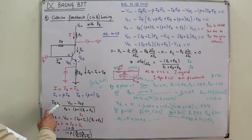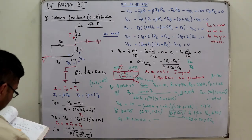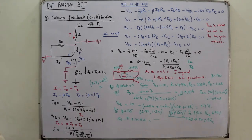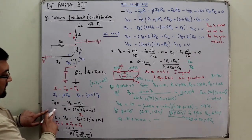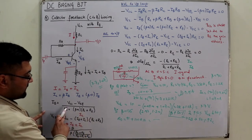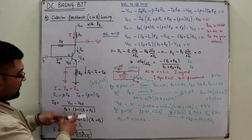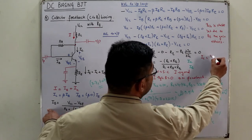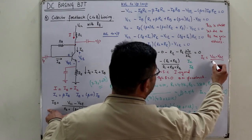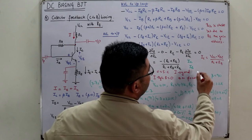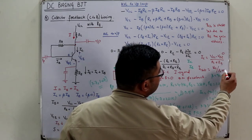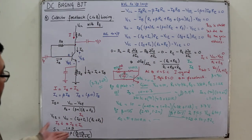The saturation current IC(sat) is the maximum IC, which occurs when VBE = 0 V, giving IC(sat) = VCC / (RC + RE). Also, since β is large, (β+1)·RC ≈ β·RC, so β cancels and IC ≈ (VCC − VBE) / (RC + RE). This establishes the IC-axis intercept of the load line.